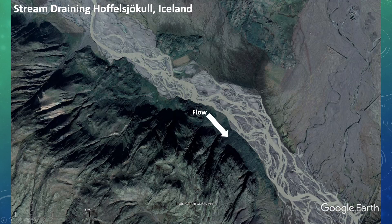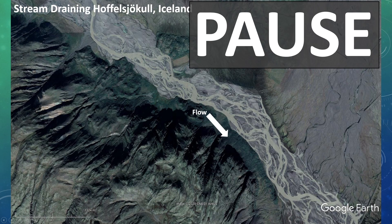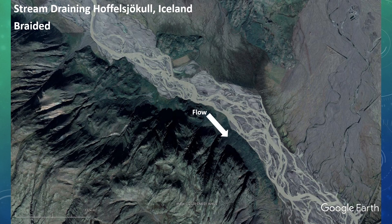Now let's look at an unnamed stream draining Hafelsjökull in Iceland. This is a braided river. Notice the high density of channels, the exposed sediment, and the lack of a distinct dominant channel. This stream drains Hafelsjökull, which is part of the larger Vatnajökull glacier — jökull meaning glacier in Icelandic. These are pretty prominent draining glaciers across much of the country.